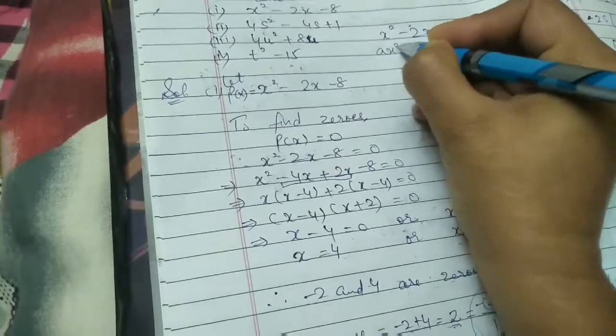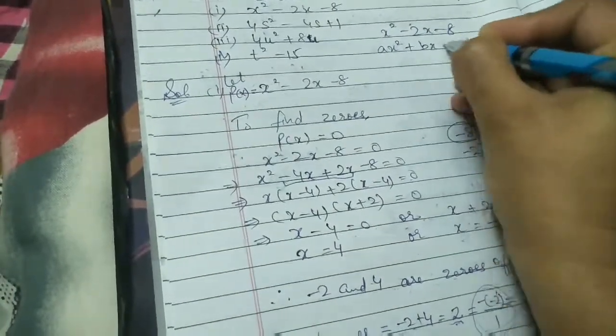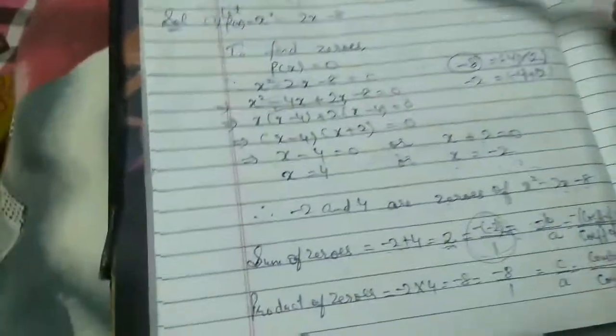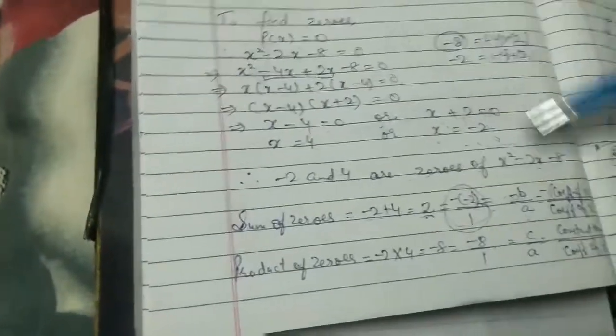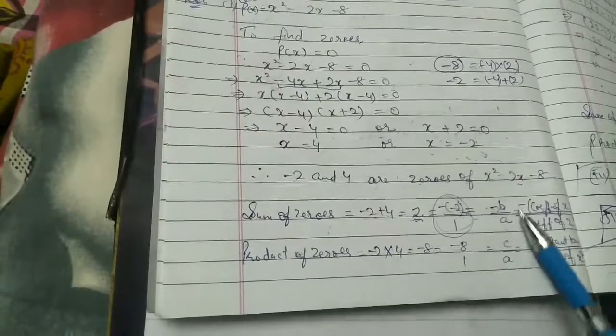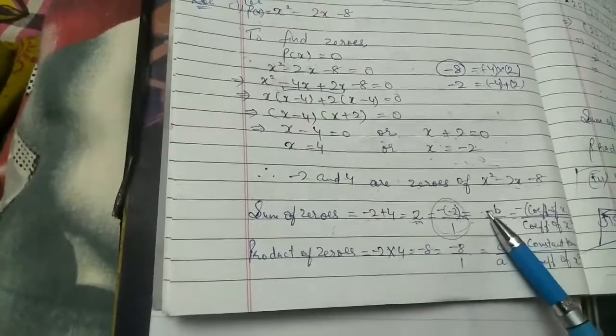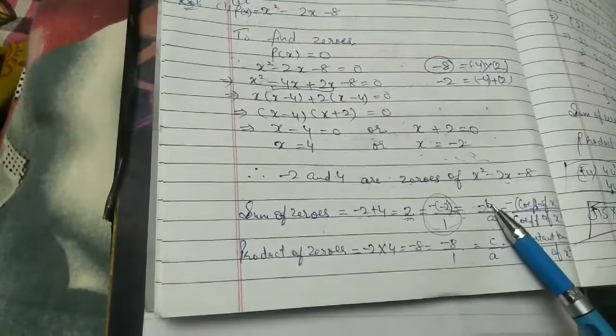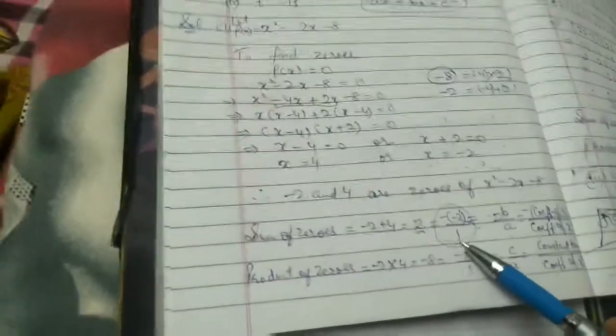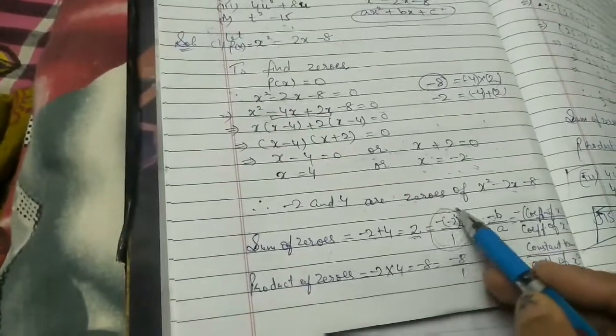Looking at x² - 2x - 8, we can write it as ax² + bx + c, where the coefficient of x is -2 and coefficient of x² is 1. So -b/a = -(-2)/1 = 2. This verifies our result.